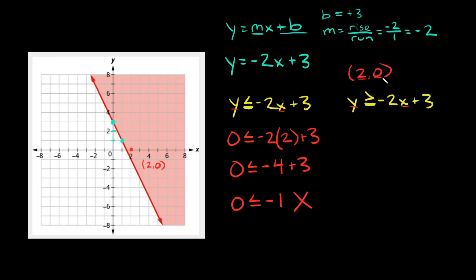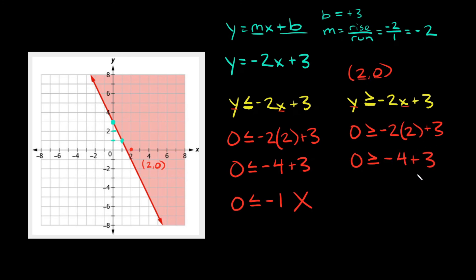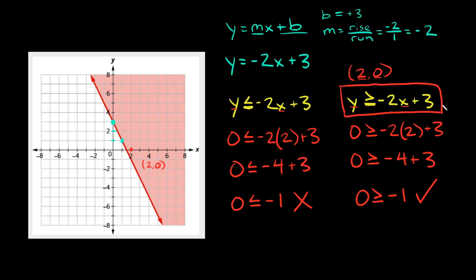Now plugging our point into the other inequality: zero is greater than or equal to negative two times two, plus three. That gives zero is greater than or equal to negative four plus three, so zero is greater than or equal to negative one. Is this a true statement? Yes it is. So the answer is y is greater than or equal to negative two x plus three.